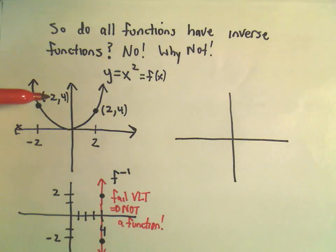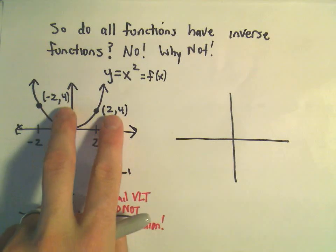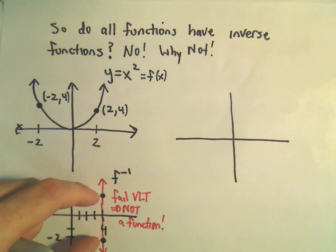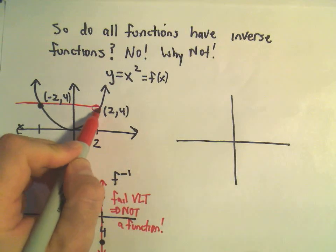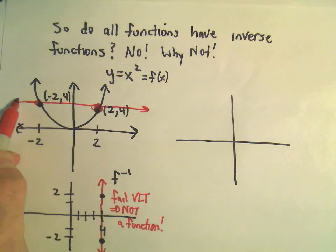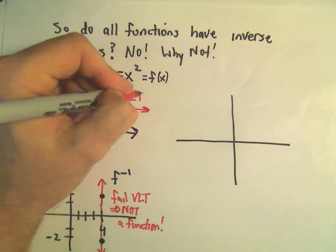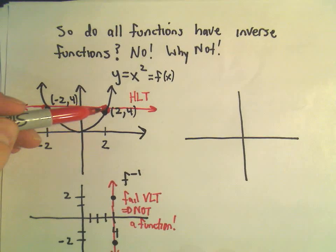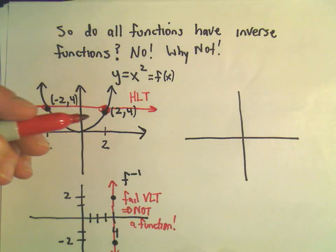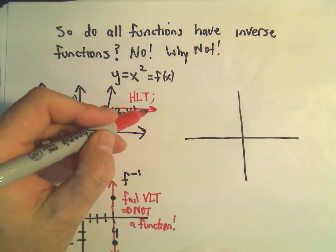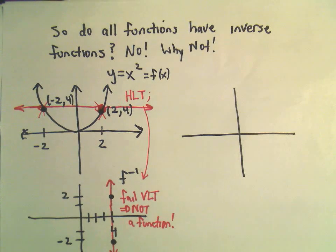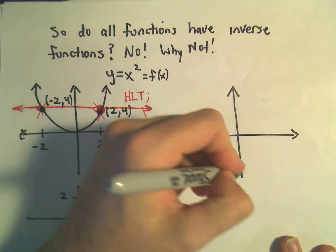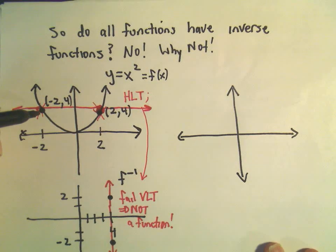So the idea is if you have different x values that have the same y value, what's going to happen is you're going to create points that fail the vertical line test. So the idea is we can use what's called the horizontal line test. If you draw a horizontal line and it hits your graph in more than one place, then we say it fails the horizontal line test, and as a consequence it's going to not have an inverse function.